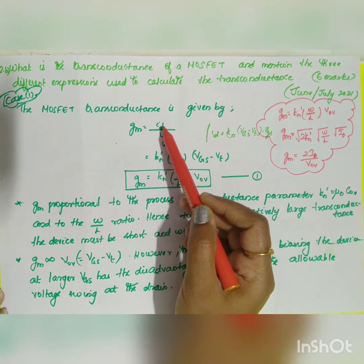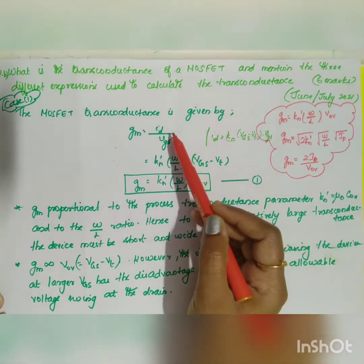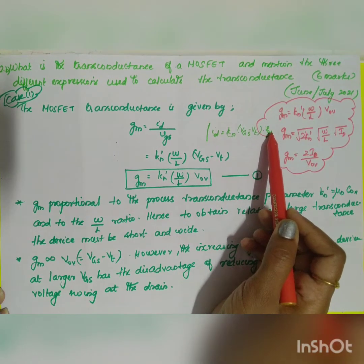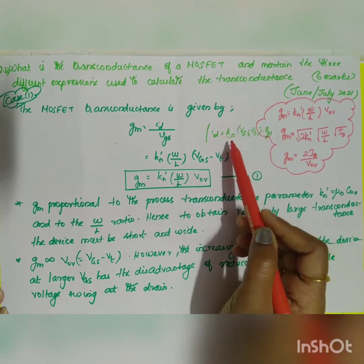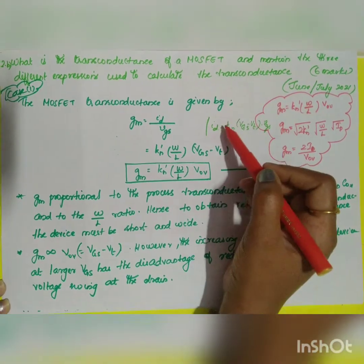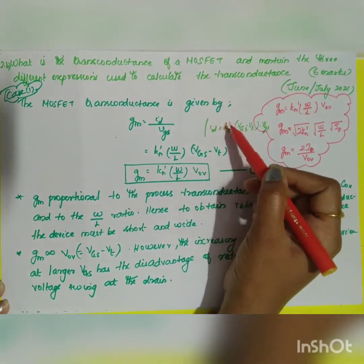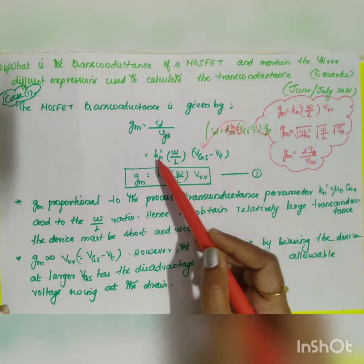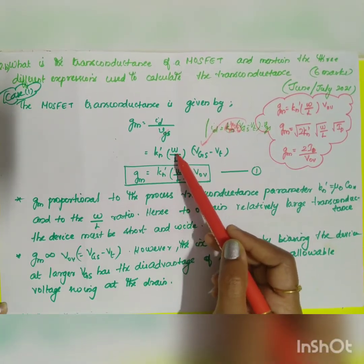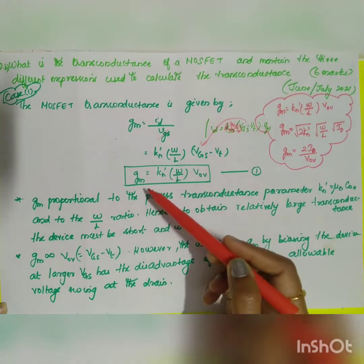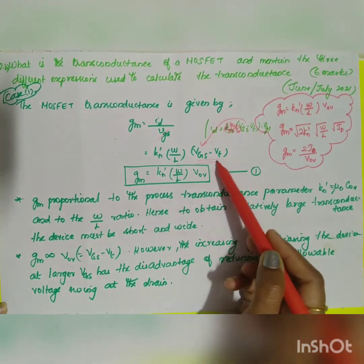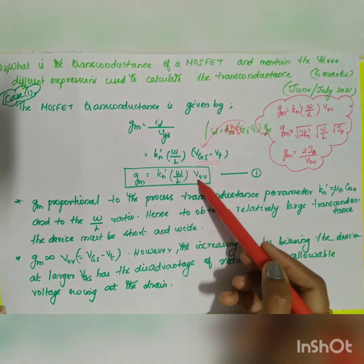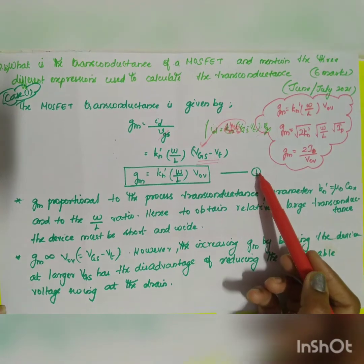The signal current derived from the small signal model is: ID = KN × (VGS − VT) × vgs, where vgs is the gate-to-source signal voltage, and KN = KN' × (W/L). When you substitute, VGS terms cancel, giving KN' × (W/L) × (VGS − VT). Since VGS − VT is the overdrive voltage VOV, the first expression is: GM = KN' × (W/L) × VOV.